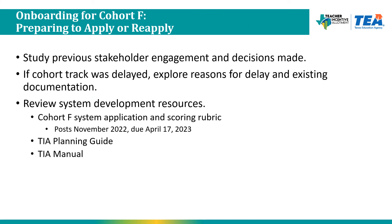Cohort F districts are preparing to apply for the first time, or perhaps reapply if they were part of a previous cohort. Start by studying previous stakeholder engagement and decisions made, including talking to campus administrators and other district-level departments. If the cohort track was delayed from a previous cohort, explore reasons for the delay and review existing documentation. Then begin reviewing system development resources, including the Cohort F system application and scoring rubric, the TIA planning guide, and the TIA manual. The Cohort F system application will post in November and will be due by April 17th, 2023.